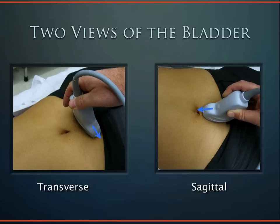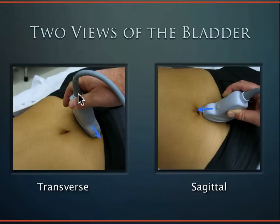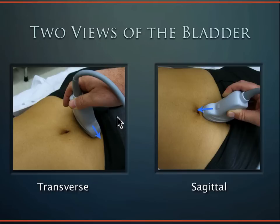There are two views of the bladder: transverse with the indicator to the patient's right, and sagittal with the indicator to the patient's head. The probe goes just below the umbilicus, but the bladder is actually much further inferior — down near the pubic symphysis. To compensate when the probe is positioned higher due to clothing, tilt the probe inferiorly so the sound shines down toward where the bladder actually is. The same applies in the sagittal view — rotate the cable to direct sound inferiorly.